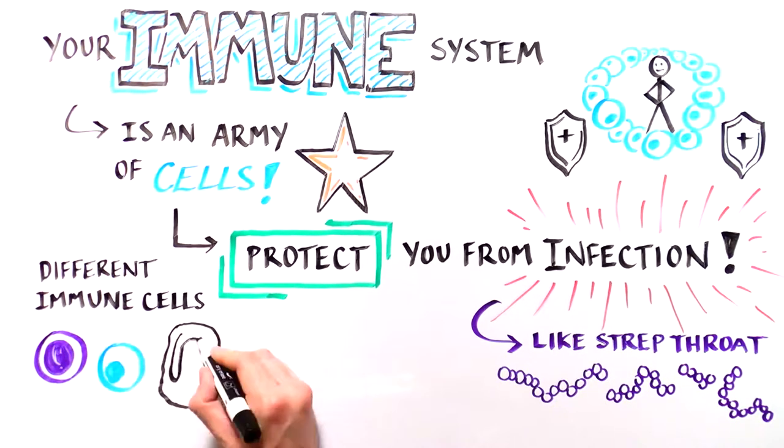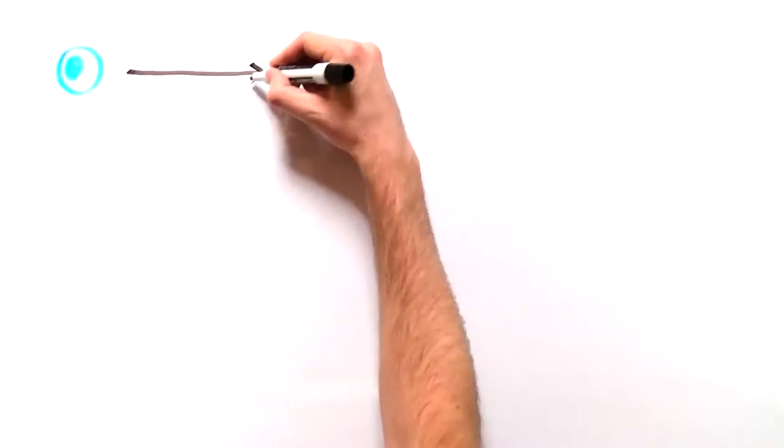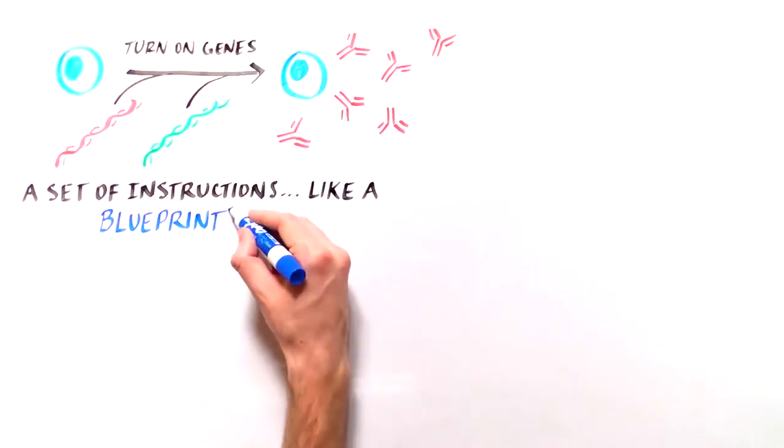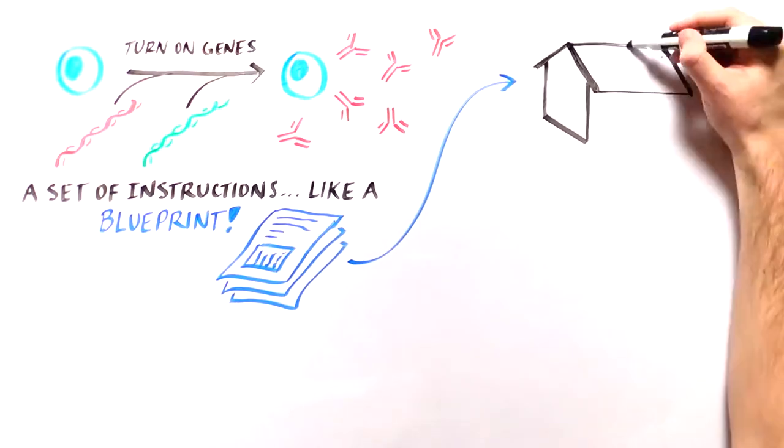Different types of immune cells have different special functions, like recognizing an infection, killing infected cells, or closing up open wounds. To be able to develop and function, cells of the immune system follow a set of instructions and turn on specific genes. This is much like how you would use a blueprint when building a house.